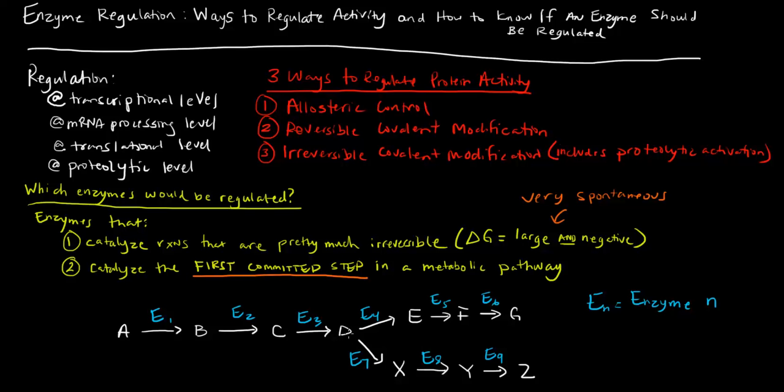Notice that once we get to D, it can either go through this path to create E, F, and G—where G is the end product—or D can go down this pathway through X, Y, and Z to create Z as an end product. These are two different pathways. Once D has gone to E, it has committed to this pathway with G as the end product. If it goes to X via the step catalyzed by enzyme 7, it commits to creating Z as the end product.